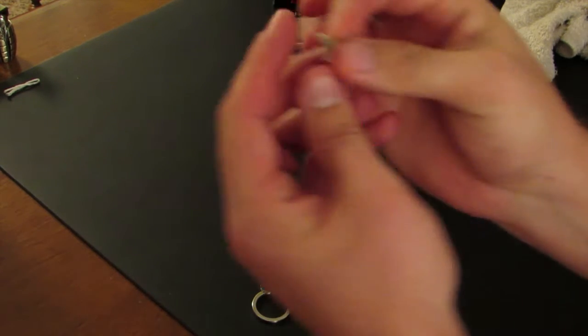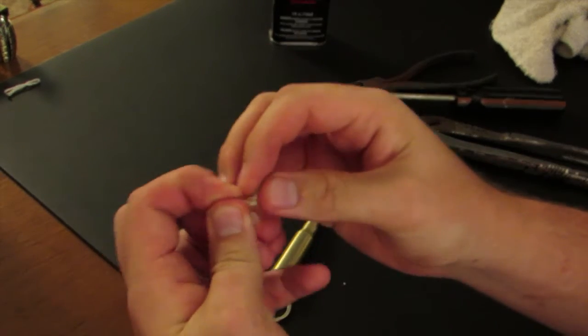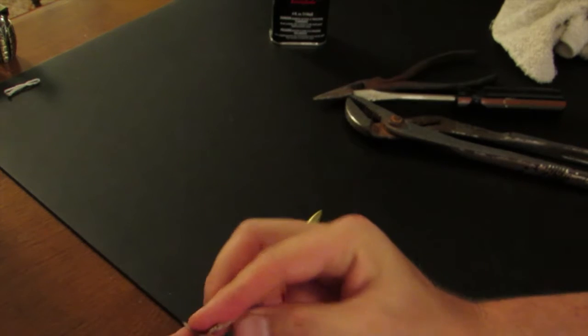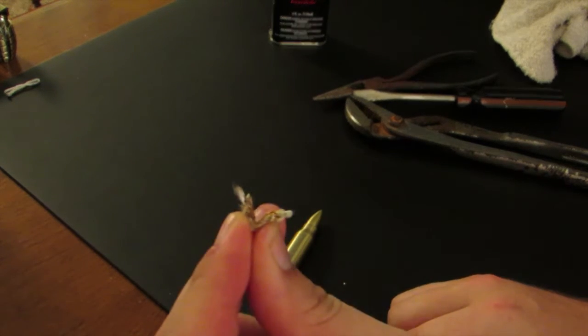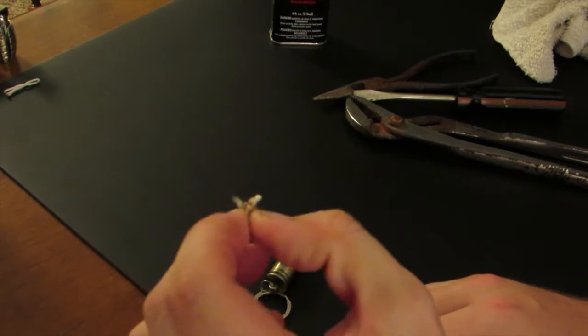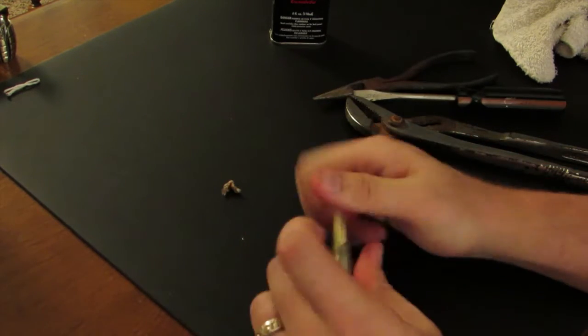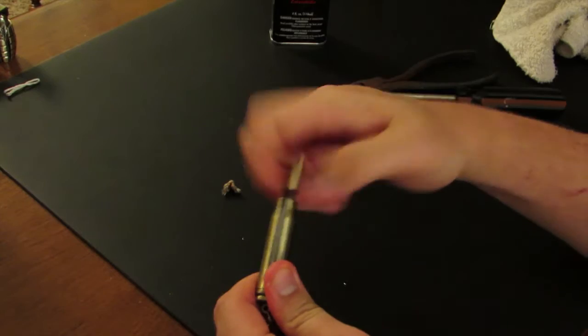This was the wick that was in my Gen 3. See, it was pretty low. So when you do this, you're going to take this and you're going to unscrew the top like you would to strike it.